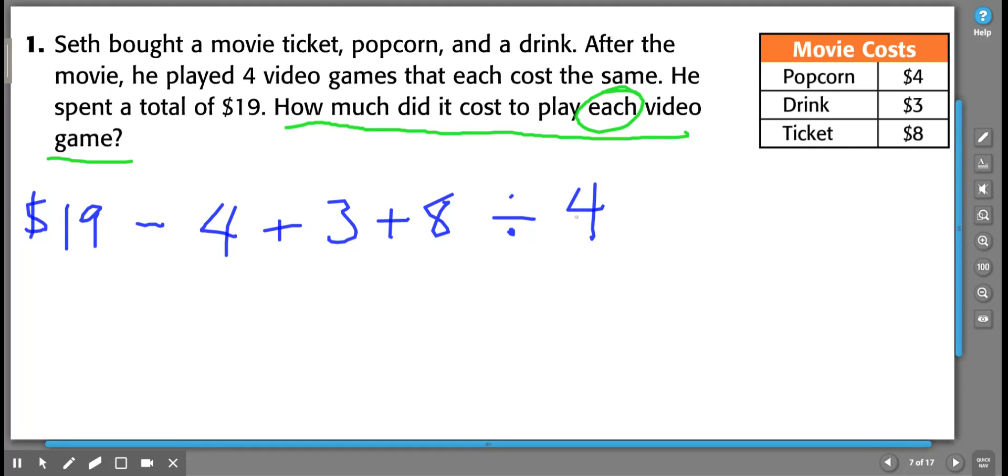Now, order of operations tells me that in this situation, if all I have is subtraction, addition, and division, I would need to start with this division first. However, we know that that's actually the last thing that he did. It's what he did with the rest of the money that he spent. So I know that if I want to make sure that I do my addition and subtraction before I do my division, then I need to put all of this in parentheses.